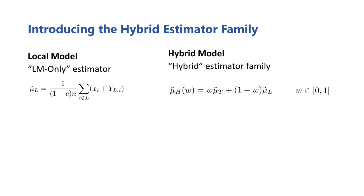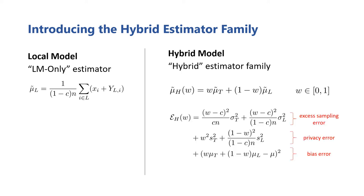However, we define this estimator because it allows us to state our hybrid estimator family very simply. It's just a convex combination of the TCM-only estimator and the LM-only estimator, weighted by this parameter w. Its error expression shows that it has all three error components, but with each now critically dependent on the choice of w.